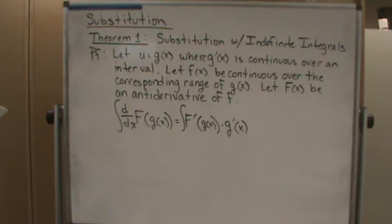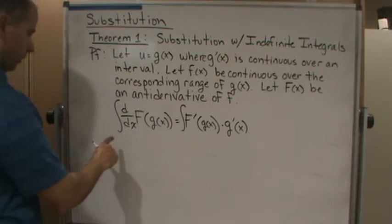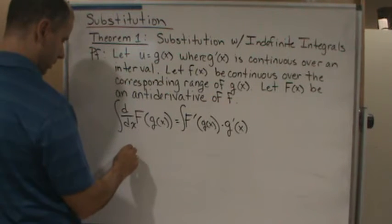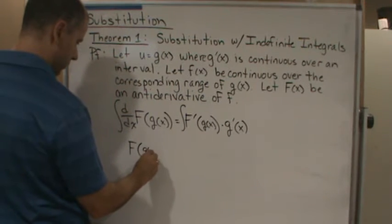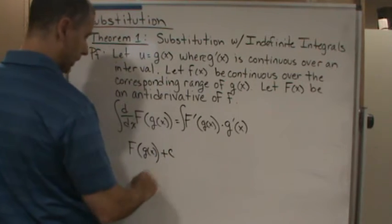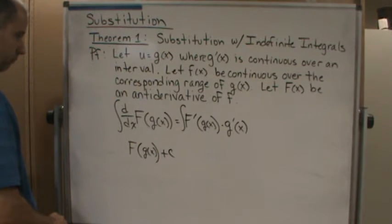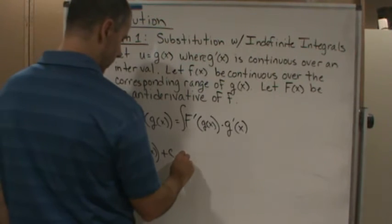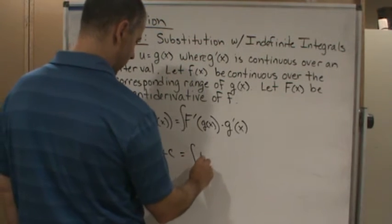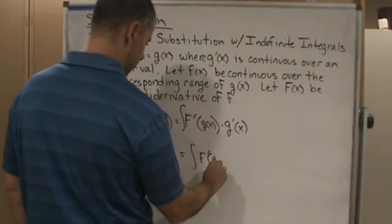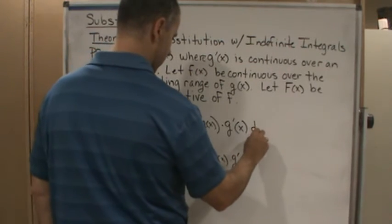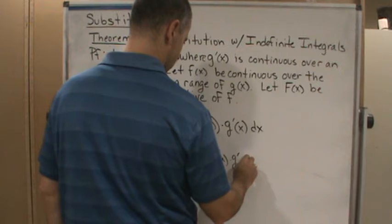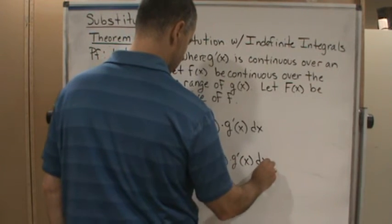Okay. And so now, what happens? Well, here, I get F of g of x plus c is equal to the integral of F prime of g of x times g prime of x dx.